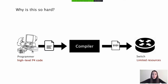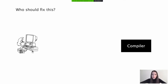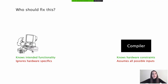This raises the obvious question: who should fix this, the programmer or the compiler? On one hand, the programmer knows the intended functionality, but ignores the hardware specifics. As a result, the programmer tries to make the program compile by blindly rewriting semantically equivalent programs and resubmitting them to the compiler. On the other hand, the compiler knows all hardware constraints, but ignores the context. As a result, the compiler tries different allocations while conservatively accounting for all possible inputs, including unrealistic or infrequent ones.